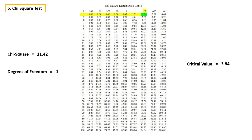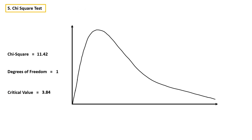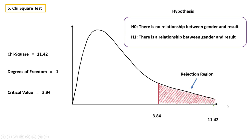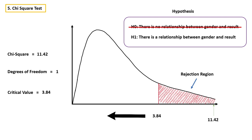After getting the critical value, we refer to the chi-square distribution. The critical value comes approximately here, and everything to the right of this line is the rejection region. The chi-square value of 11.42 comes approximately here. As a rule of thumb, if the chi-square value is greater than the critical value, then we can reject the null hypothesis and conclude there is a relationship between gender and result. Or if the chi-square value is lesser than the critical value, then we can't reject the null hypothesis and conclude there is no relationship. In this case, the chi-square value is greater than the critical value, so we conclude there is a relationship.